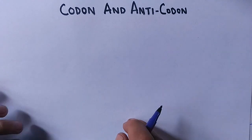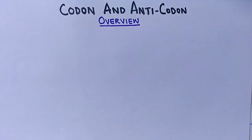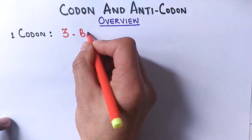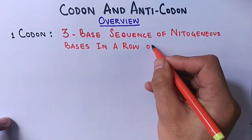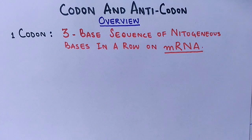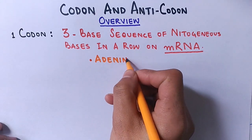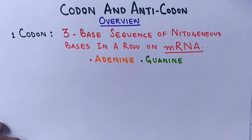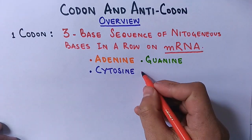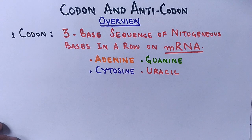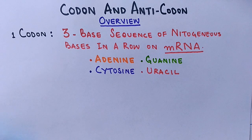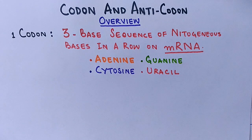First of all, let's get an overview. In simple terms, a codon is a three-base sequence of nitrogenous bases in a row on messenger RNA. We know that mRNA is a single-stranded molecule of polynucleotides — adenine, guanine, cytosine, and uracil. Thymine is not present here; instead of thymine, we have uracil in mRNA.